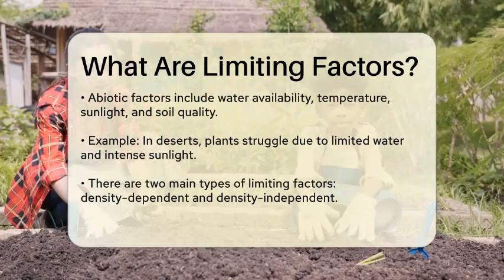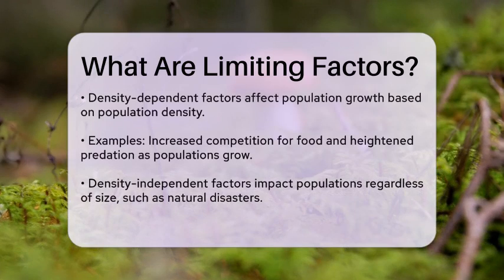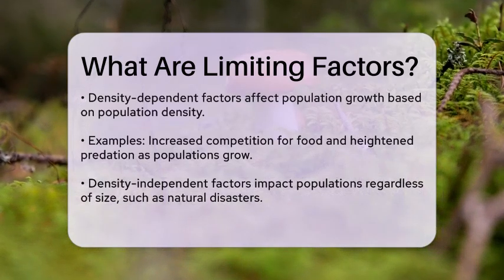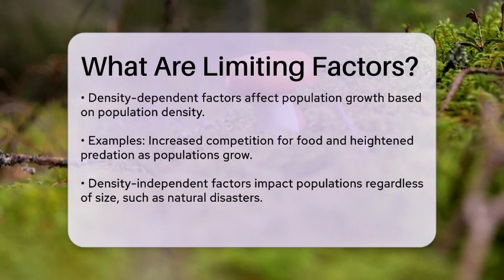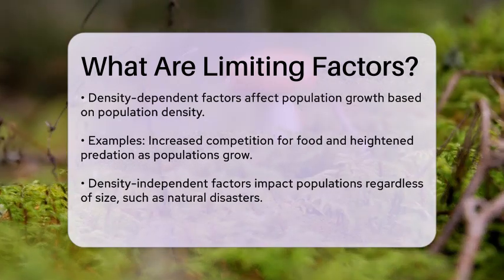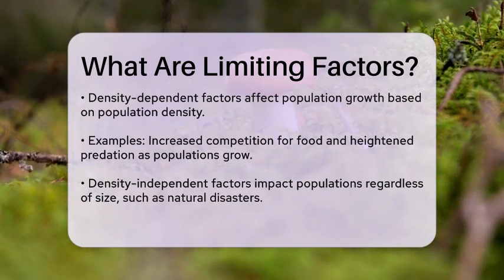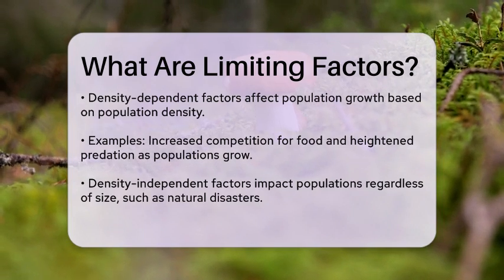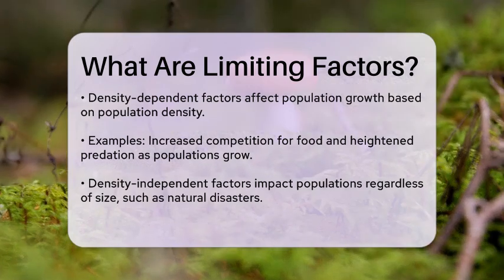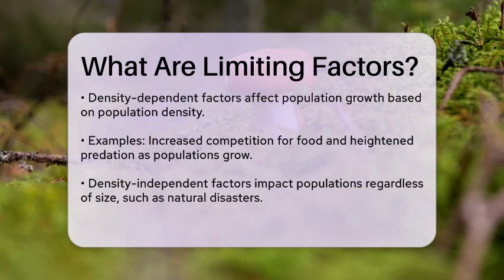Now there are two main types of limiting factors: density-dependent and density-independent. Density-dependent limiting factors are those that impact population growth based on how dense the population is. For example, as a population grows, competition for food becomes more intense, which can limit further growth. Predation and disease also become more significant as populations increase. Density-independent limiting factors, however, affect populations regardless of their size. Natural disasters like floods or droughts can drastically impact populations, no matter how many individuals are present.